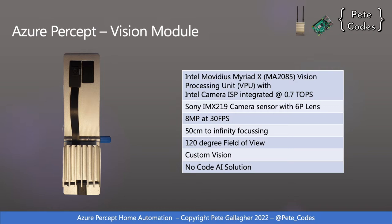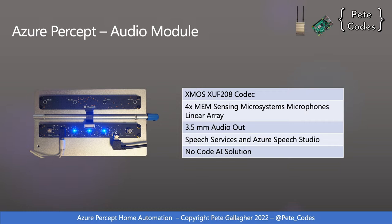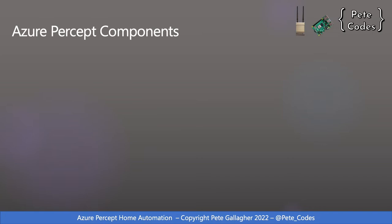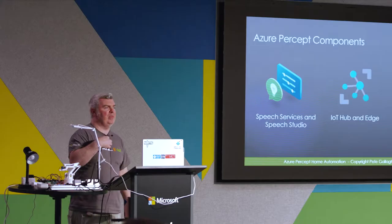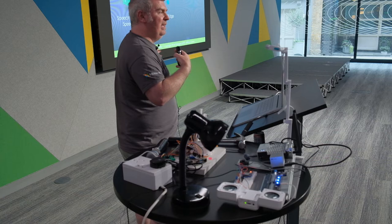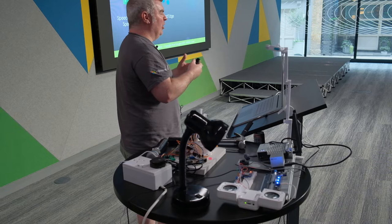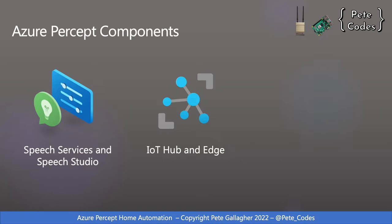The vision module uses custom vision — it's capturing images and video and sending that up to Azure for processing. The sound module has a bunch of microphones and uses speech services like LUIS up in Azure. On the speech side, we use speech services and speech studio. LUIS is the Language Understanding Intelligence Service — it's all about converting what we're saying into written word, and it also goes the other way, converting written word into speech. It's about grabbing the intent of what you're saying and converting it into something you can then use. On the vision side, we use custom vision to take images and determine what's in them.